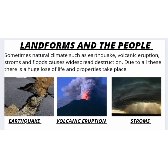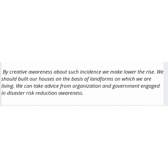Sometimes natural calamities such as earthquakes, volcanic eruptions, storms and floods cause widespread destruction, resulting in a huge loss of life and property. To prevent such natural calamities, we can create awareness about such incidents, which will help lower the risks. We should build our houses on the basis of the landform on which we are living, and take advice from organizations and governments engaged in disaster risk reduction awareness.